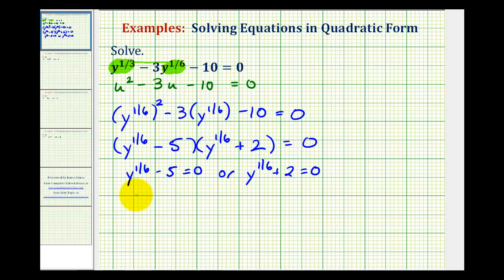So here we'll add five to both sides. Y to the one-sixth equals five. We want y to the first, not y to the one-sixth. So if we raise this to the sixth power, we would have y to the first. So we must do the same to the right side. So now we'd have y equals five to the sixth is equal to 15,625.